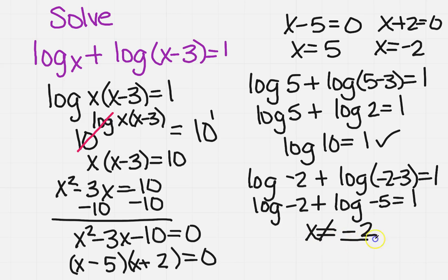So what that tells me is that x cannot be negative 2. And again, it's because you can't have negative numbers. So the only thing in your solution set is 5.